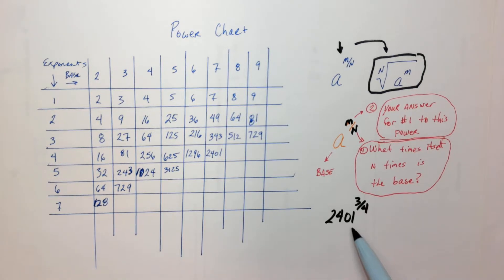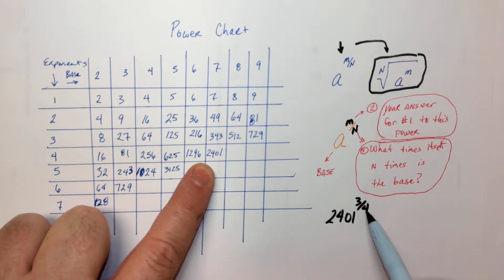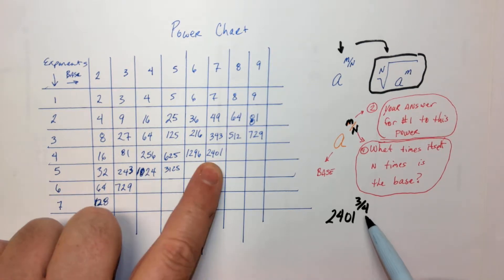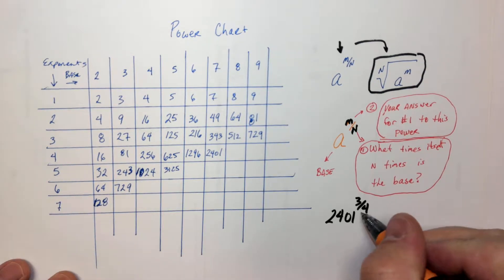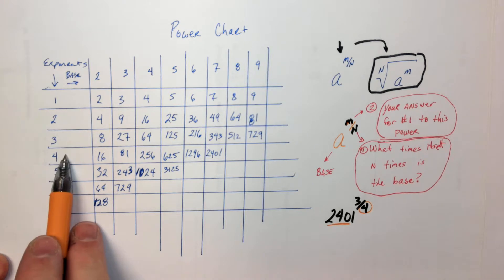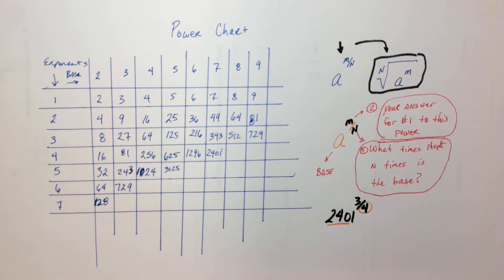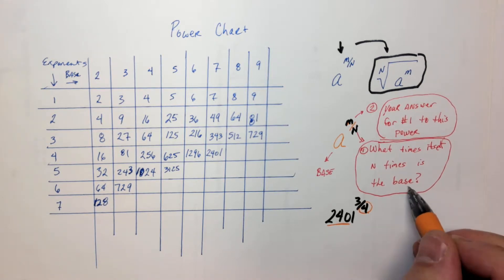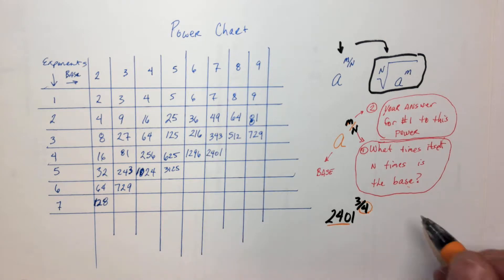So, for example, 2401 is right here. And that's nice because this is the 4th power. So this 4 right here is asking: what number times itself 4 times equals this? And you can see on my chart — exponent of 4, 2401 — that's 7. So the answer to this first question is 7. So we take 7 and we cube it, and we get 343.